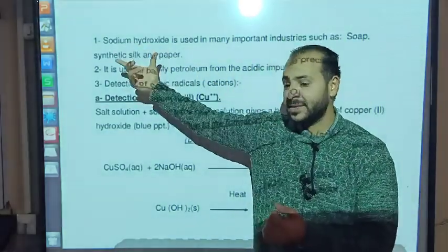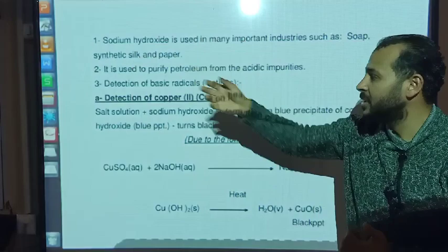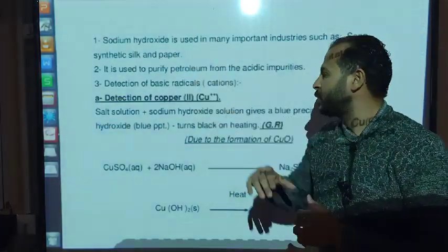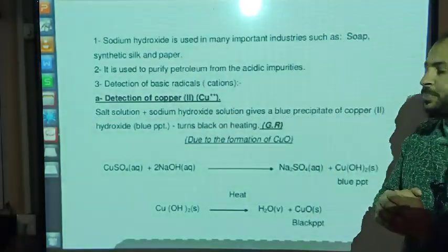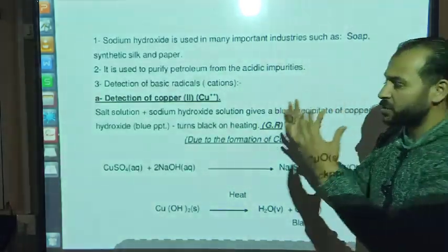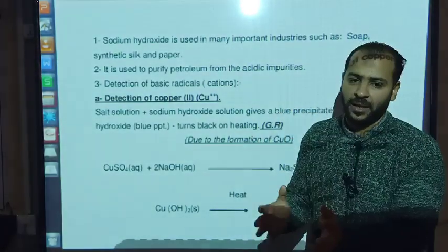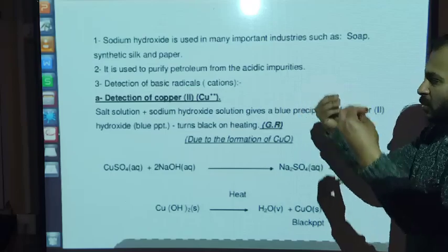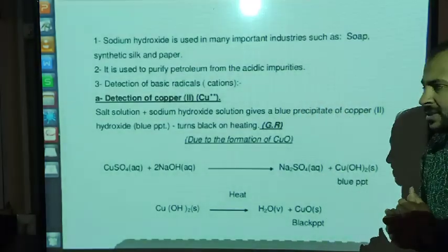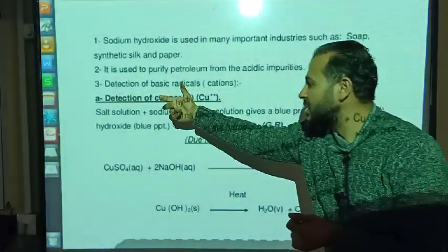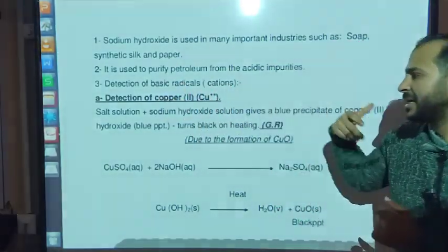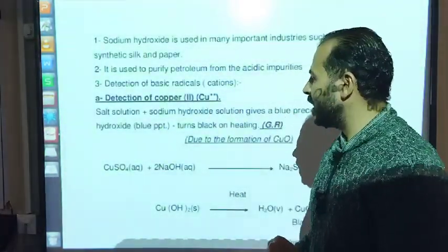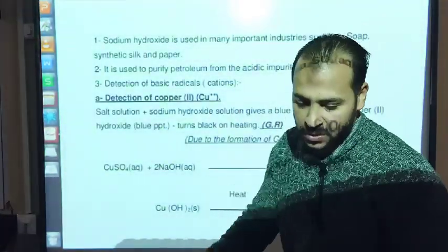Sodium hydroxide is used in many important industries such as manufacturing synthetic silk and paper. It is also used to purify petroleum from acidic impurities, since sodium hydroxide is alkaline and reacts with acids to remove them. It is also used for detection of basic radicals such as copper. Let's observe a copper solution to demonstrate this.